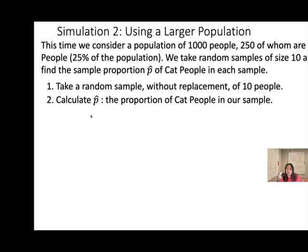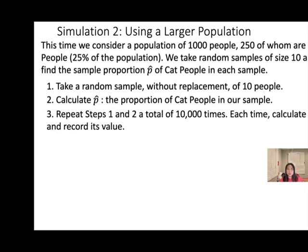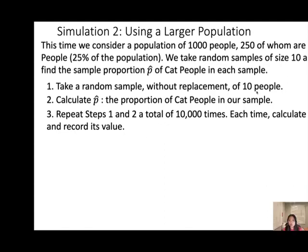Then calculate the sample proportion. Step 3: repeat steps 1 and 2 a total of 10,000 times. Each time, calculate P-hat and record its value — similar to the idea we did on paper, except we keep drawing samples of 10 people and calculating the sample proportion, then write out all the outcomes.